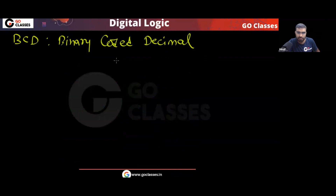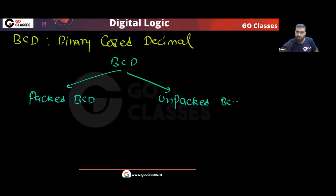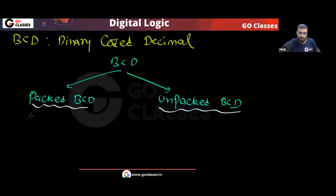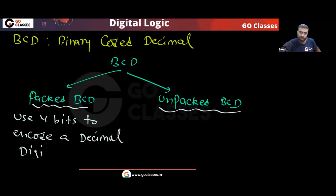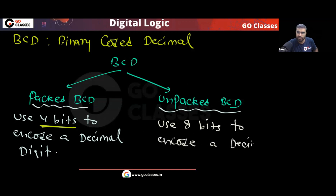Now what is packed BCD and unpacked BCD? In BCD there are two types: packed BCD and unpacked BCD. In packed BCD we use 4 bits to encode a decimal digit. In unpacked BCD we use 8 bits to encode a decimal digit. That is the only difference. By default, BCD means packed BCD — we use 4 bits per decimal digit.